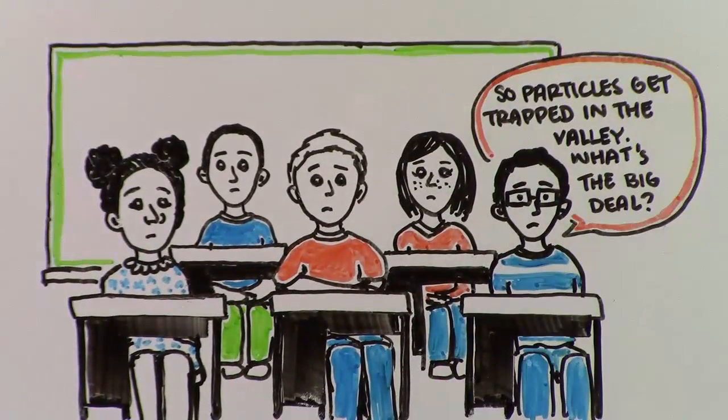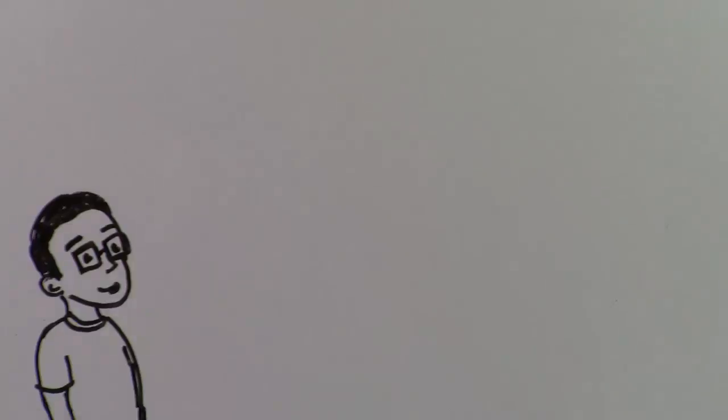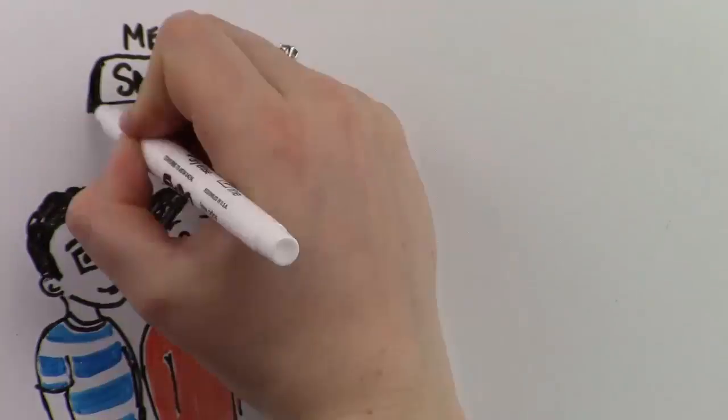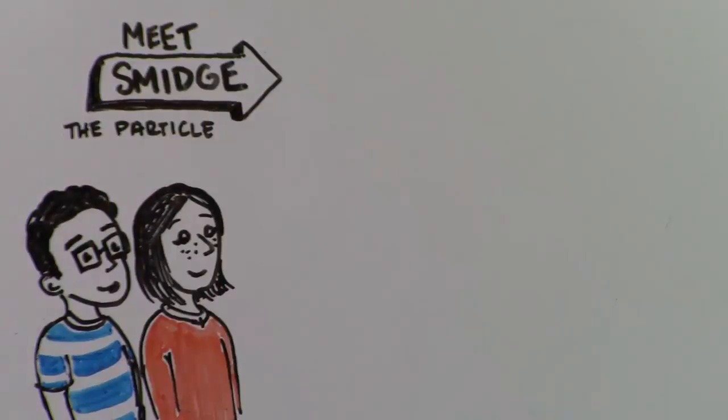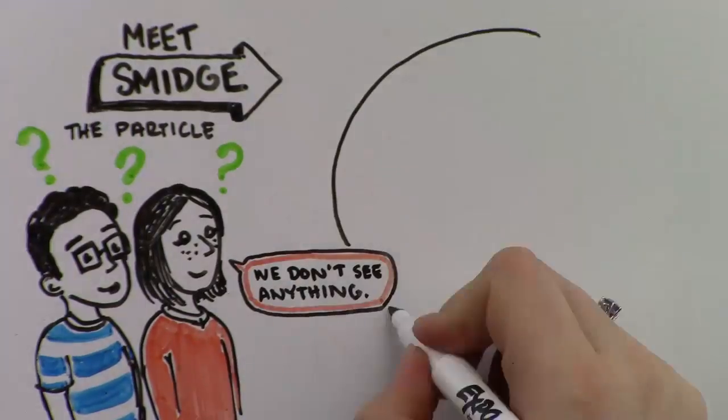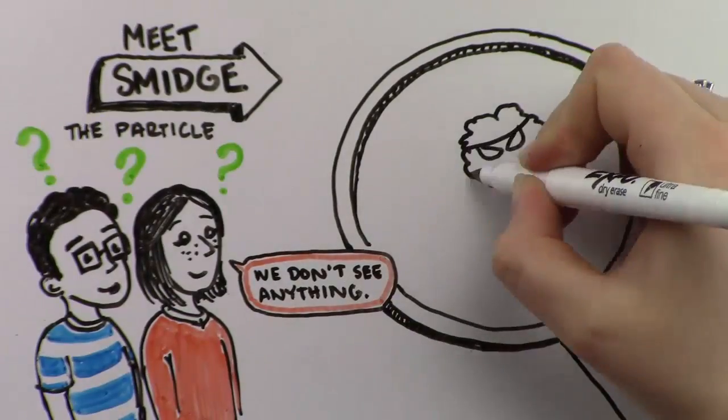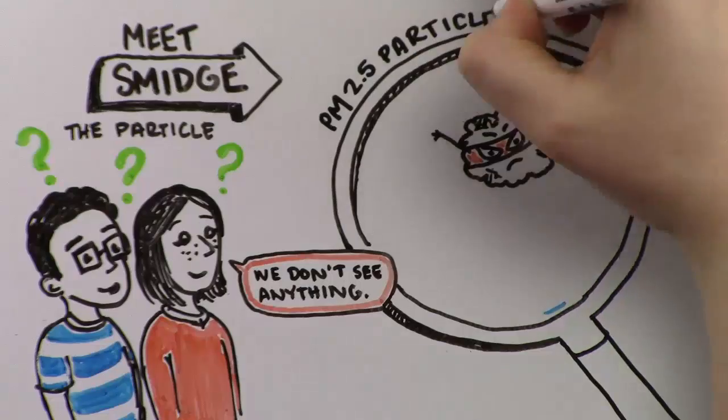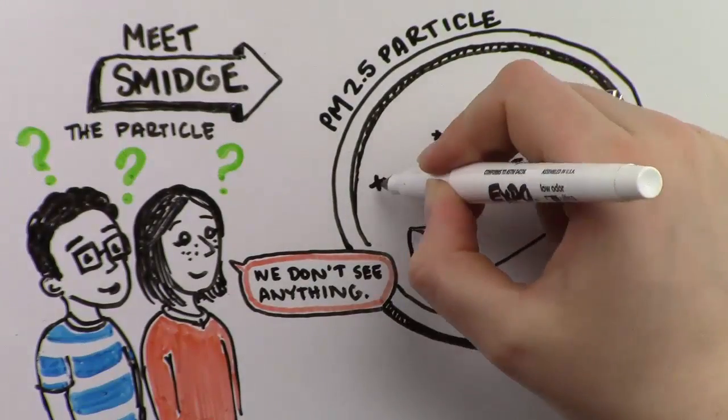What's the big deal? It's actually a very tiny deal. Meet Smidge the particle. We don't see anything. Let's zoom in. Smidge is a PM 2.5 particle. This means he is so small that Smidge and 39 of his sidekicks can fit across a strand of your hair.